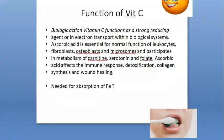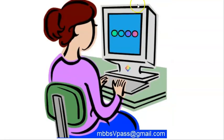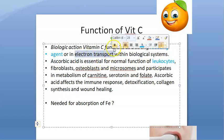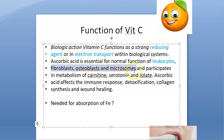Now let's go to the functions. Vitamin C is a strong reducing agent. It is essential for WBC functioning. It is used for electron transport, fibroblast, osteoblast, and microsomes.